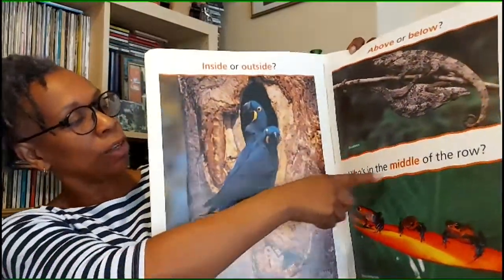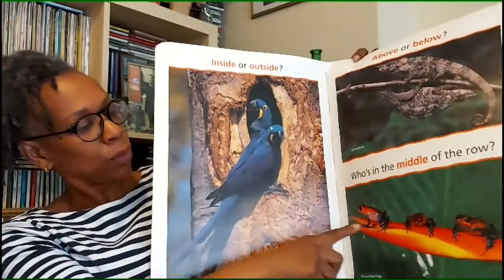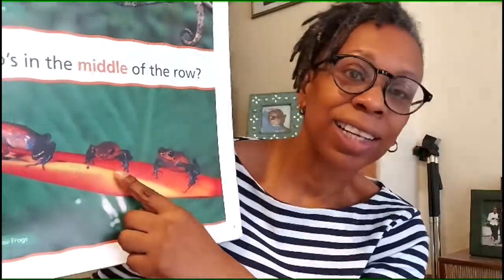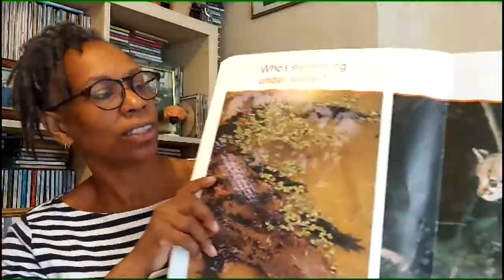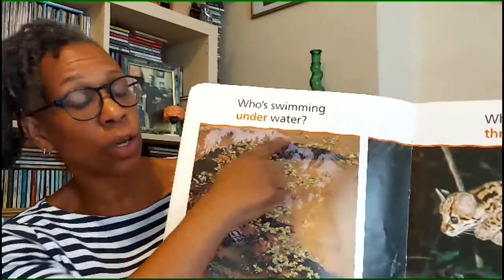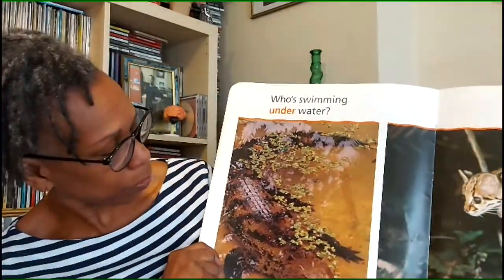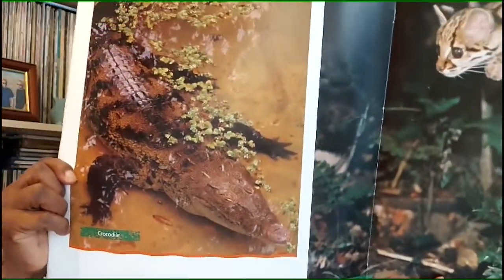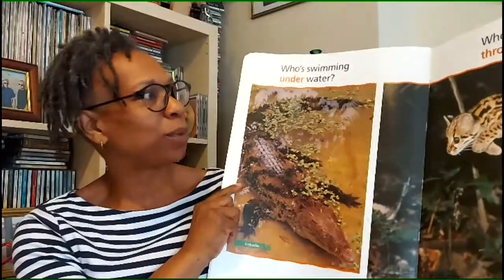Who's in the middle of the row? Who's in the middle of that row? Have a look. Who's swimming underwater? Can you see him? He's under the water.